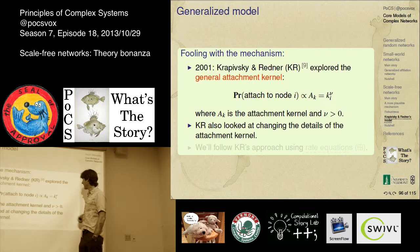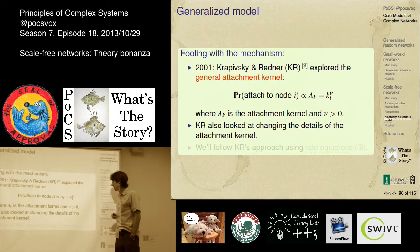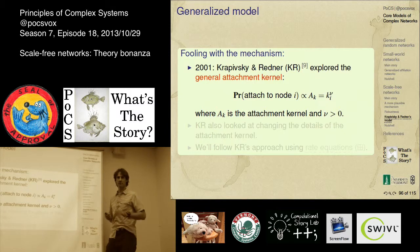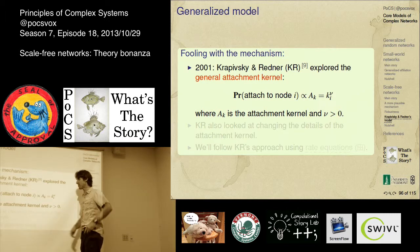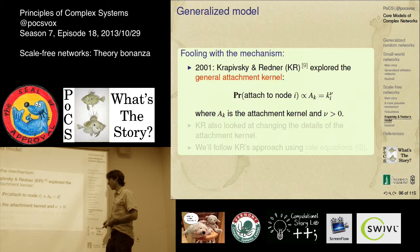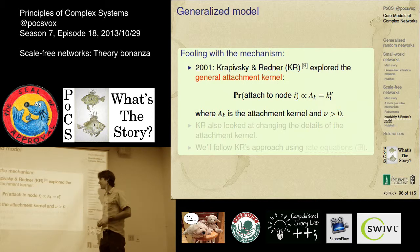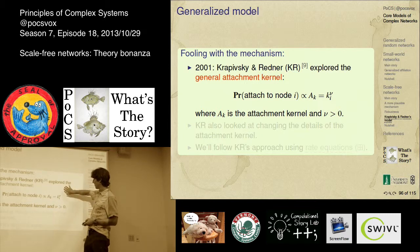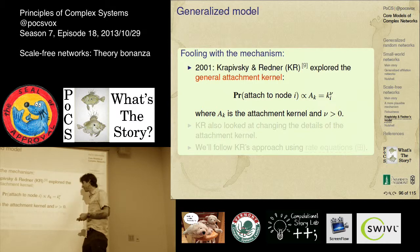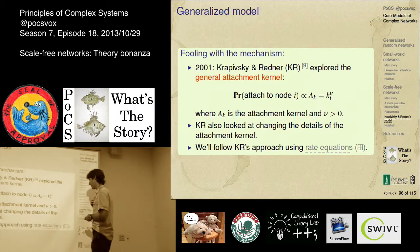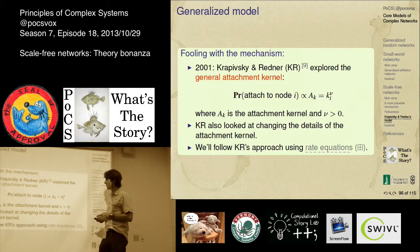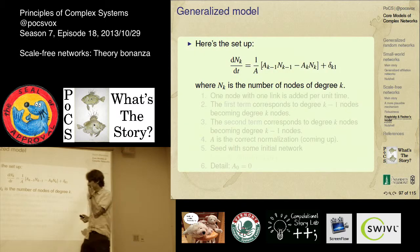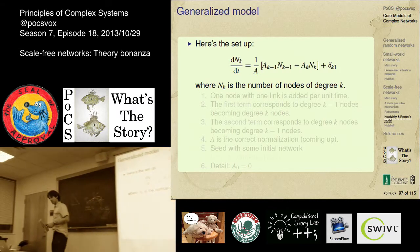We have an attachment kernel A_k. Instead of just k to the one — linear attachment, which is very plausible, and as we said naturally gives you linear attachment when you attach randomly and then meet one of the friends — there could be some details: maybe it's k plus two or something else. In general, if nu is greater than 1, we have a rich-get-very-rich situation; if nu is less than 1, the rich get only a little bit more rich. You can dial this. They use a rate equation approach, similar to Simon's model.